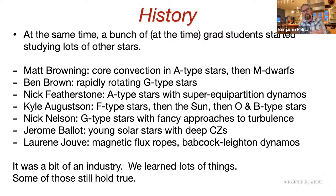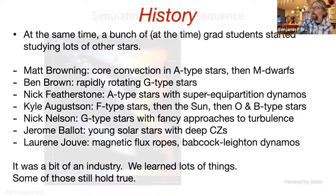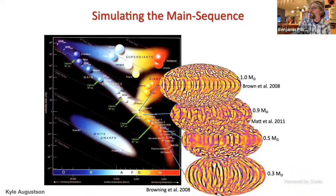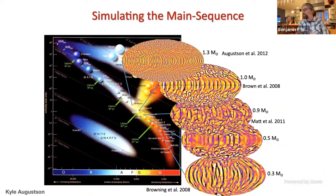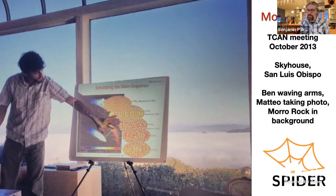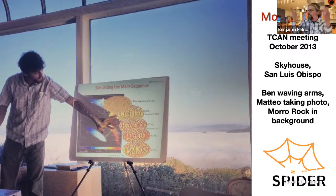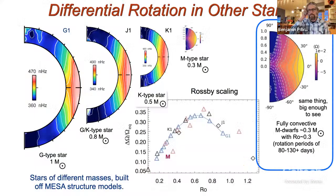At the same time, a bunch of grad students started studying lots of other stars. Matt Browning did A stars and M dwarfs, I was playing with rapidly rotating solar-type stars. Lots of us who came through either Sasha Bruhn or Yuri Toomre went out into the field. On the HR diagram we would do different stars at different spots — M dwarfs near the fully convective limit, solar-type stars, K stars, F-type stars. We were looking all over the lower main sequence and we thought we really had things pinned down.